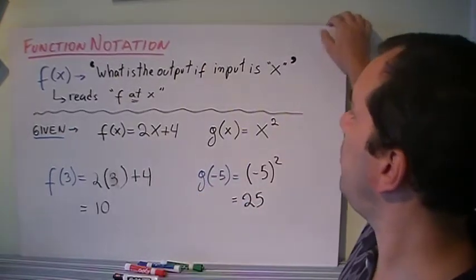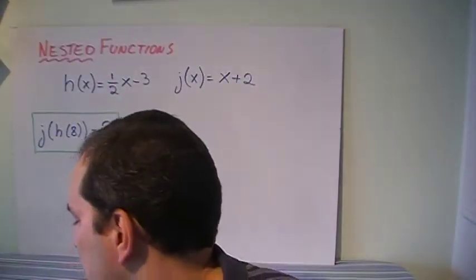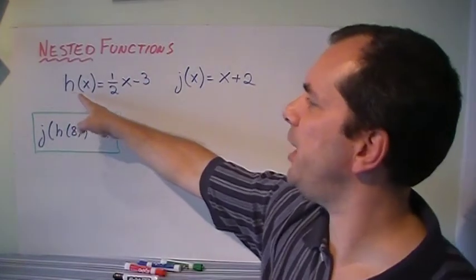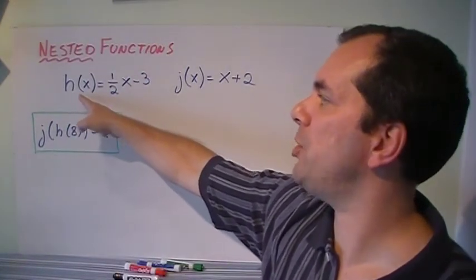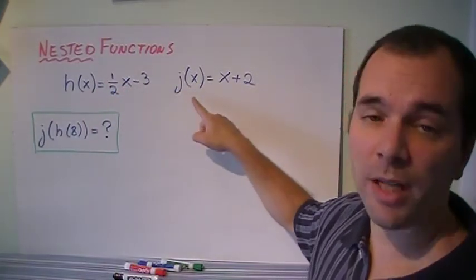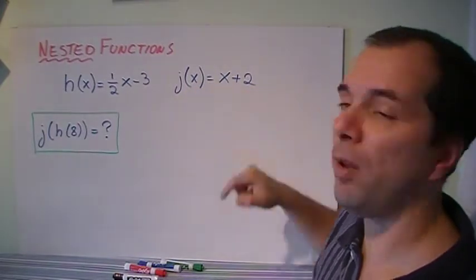Now one extra step or complication is something called nested functions. So I have the function of a function. Let's say they give us h(x), so this function h and the input is x, is ½x minus 3. And they ask me for j(x), which is x plus 2.